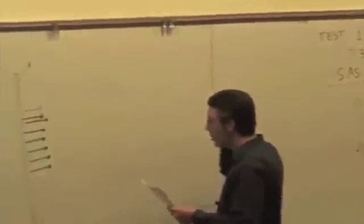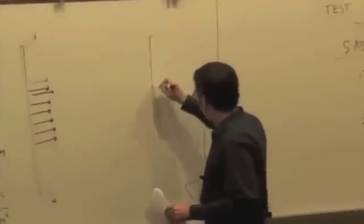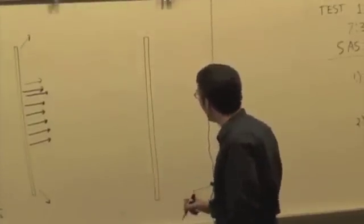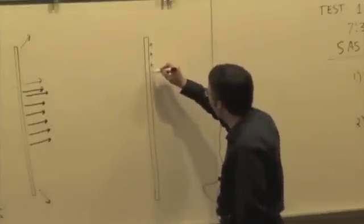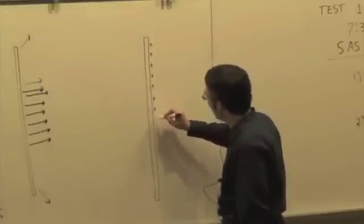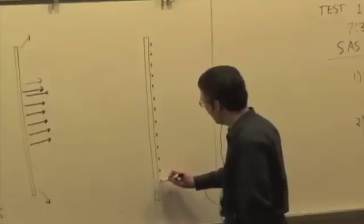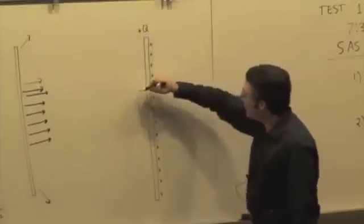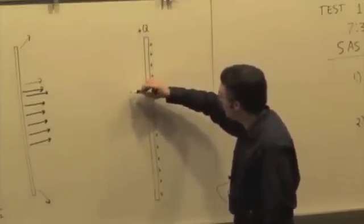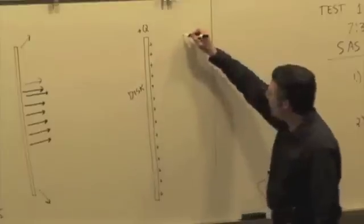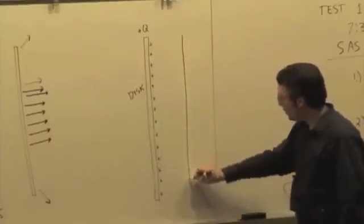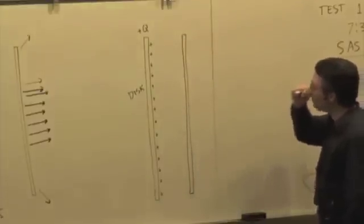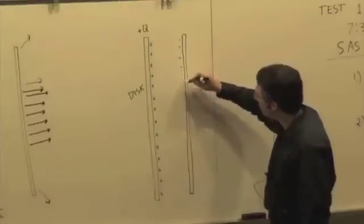In practice, there's a specific situation that comes up a lot in technical applications where you have one disk that is positively charged. So we'll call this plus Q. And again, this is an edge-on view of a disk. And another disk that is same dimensions, and it's parallel to it, right next to it, but it has the opposite charge. So this is negatively charged.